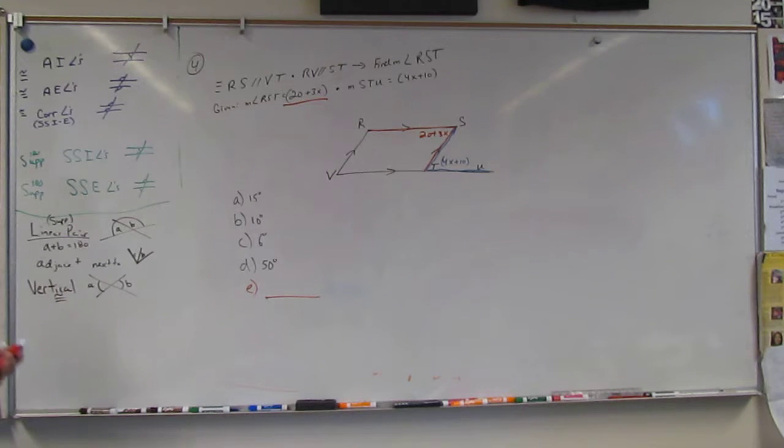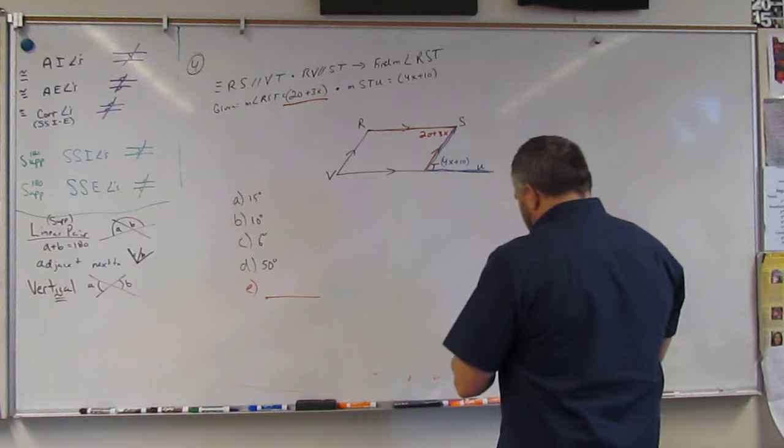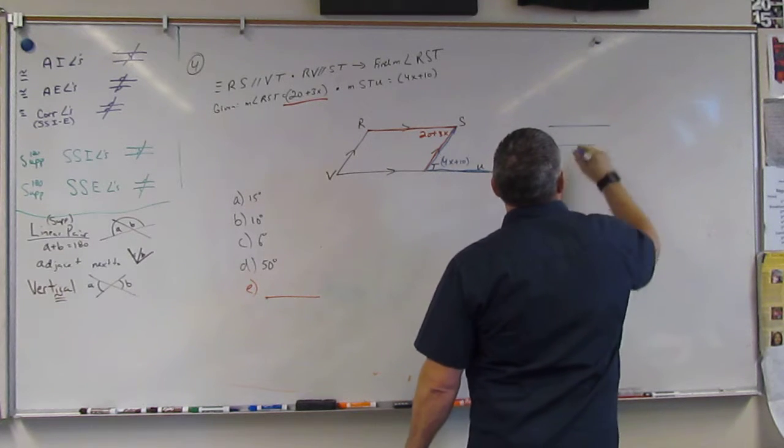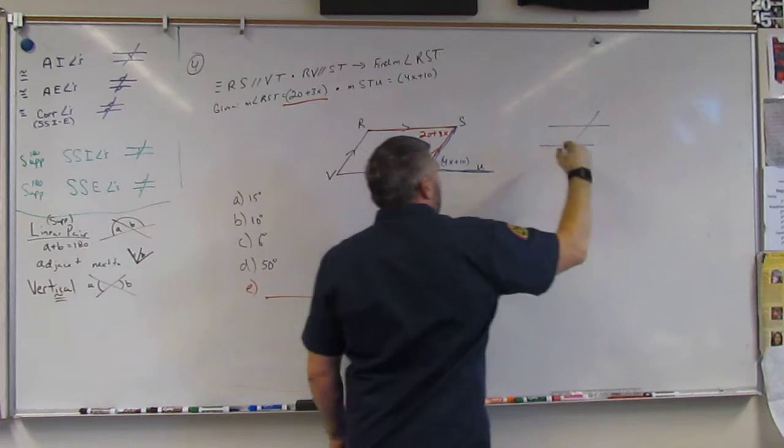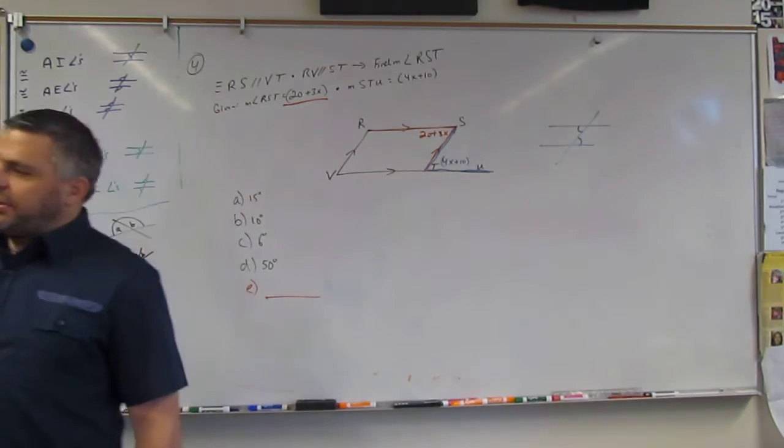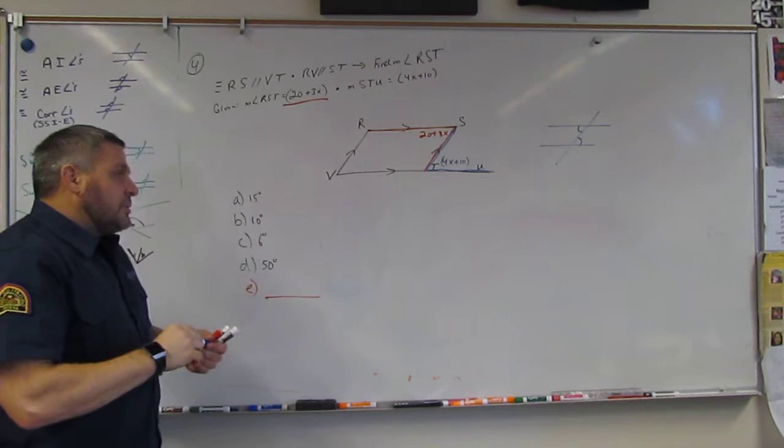I have to understand what this is. What is going on right here is pretty simple. I have parallel lines cut by transversal. Now, I have this and this. What are those? What do we consider those? Alternating angles. Very good.